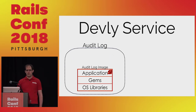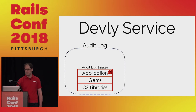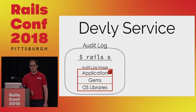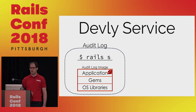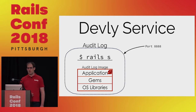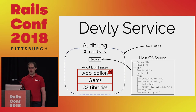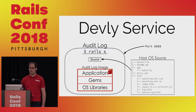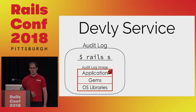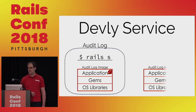A Devly service is a runtime configuration for an image. Here we've created the audit log service using the audit log image. A service runs a command — since the audit log service provides an API for managing event data, it runs a Rails server to provide the HTTP interface for events. Our audit log service needs to be accessible to other services, so we expose port 888. If you use a development framework like Rails that supports live development, you can mount your repository on top of the files in the image. This allows you to work in your favorite editor from your favorite OS and see changes in your browser.